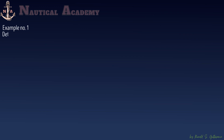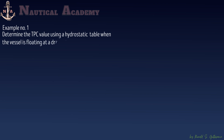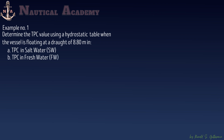This is the first example. Determine the TPC value using a hydrostatic table when the vessel is floating at a draft of 8.80 meters. The first required is to determine the ship's TPC in salt water, relative density 1.025, at a draft of 8.80 meters. The second is in fresh water, relative density 1.0, at 8.80 meters. And the third is in dock water with a relative density of 1.015 at 8.80 meters.